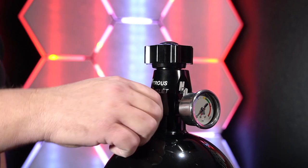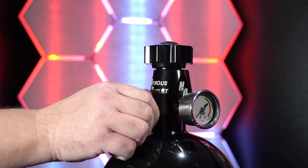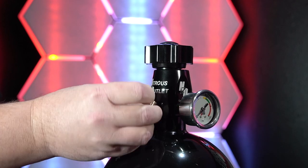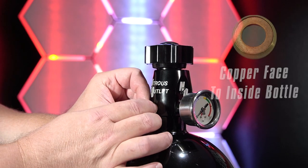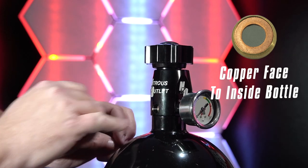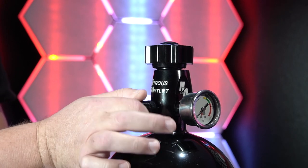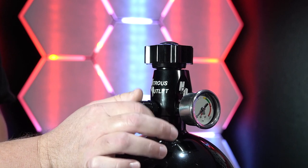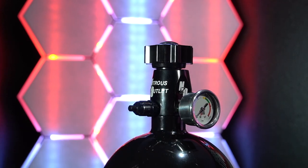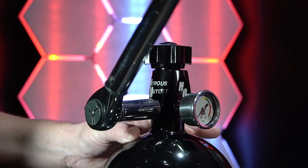Installation is easy. Remove the bottle valve's stock relief fitting and burst disc. Install the new burst disc with the copper side facing into the bottle valve's pressure relief port. Screw the nitrous outlet pressure relief fitting into the bottle valve's relief port, then torque to 15 foot-pounds.